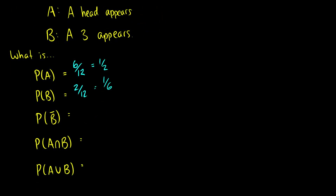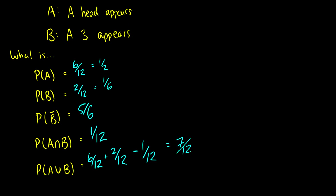What is the probability of not B? That's the probability that one, two, four, five, or six appears, which is five sixths. This is also the same as one minus the probability of B. Now what are the chances that both A and B occur? There's only one scenario where a head and a three both appear, and there are 12 total scenarios, so that's one twelfth. What about if a head appears or a three appears?